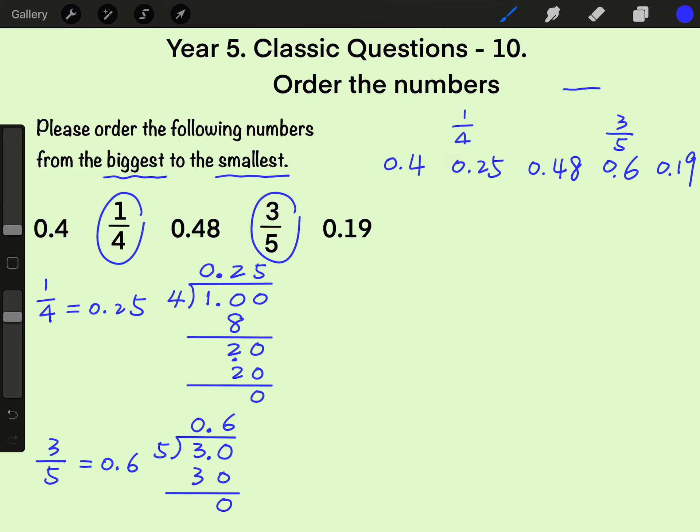When we compare a group of decimals, we start from the left towards the right. So first, let's check out the one digit position: 0, 0, 0, 0, 0.